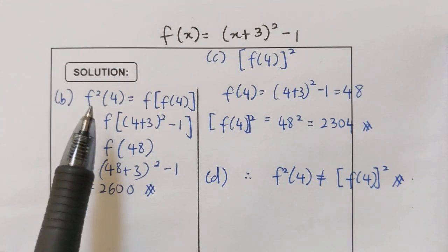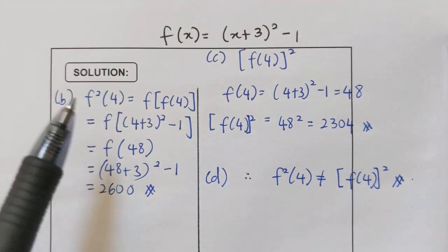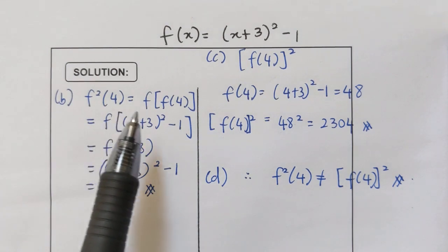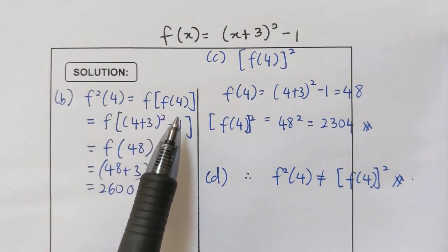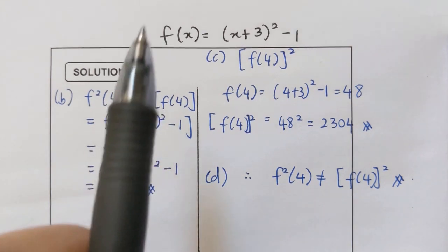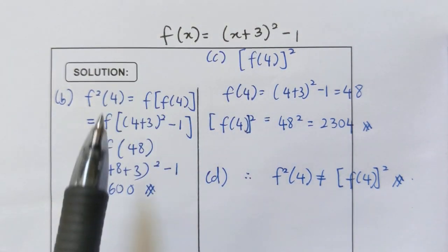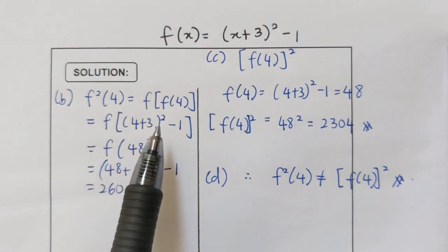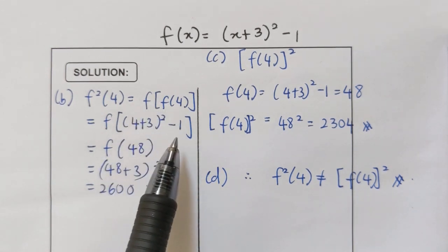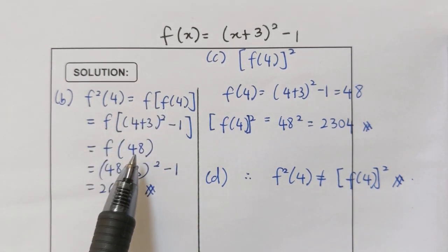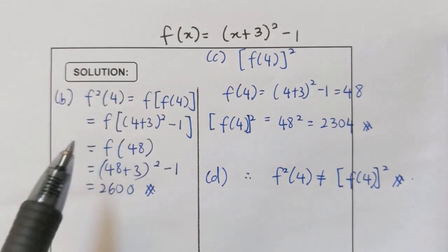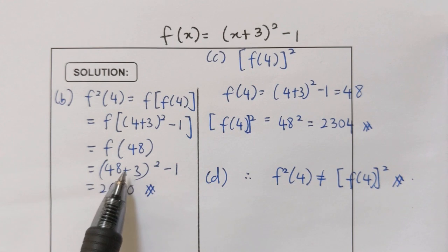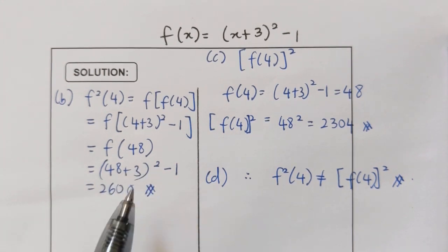For b, we need to find f²(4). Given that we have f squared, you know that this is f(f(4)). So we substitute 4 into our function f: (4 plus 3) squared minus 1. We simplify in the bracket, so we will get 48. So I substitute 48 into my function f: (48 plus 3) squared minus 1. And you simplify this, you should get 2600.